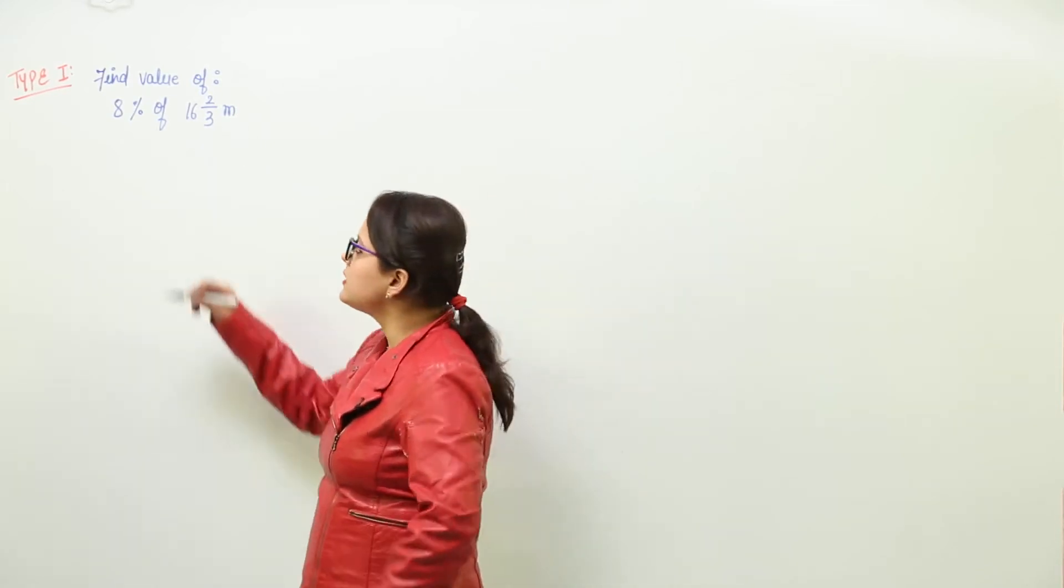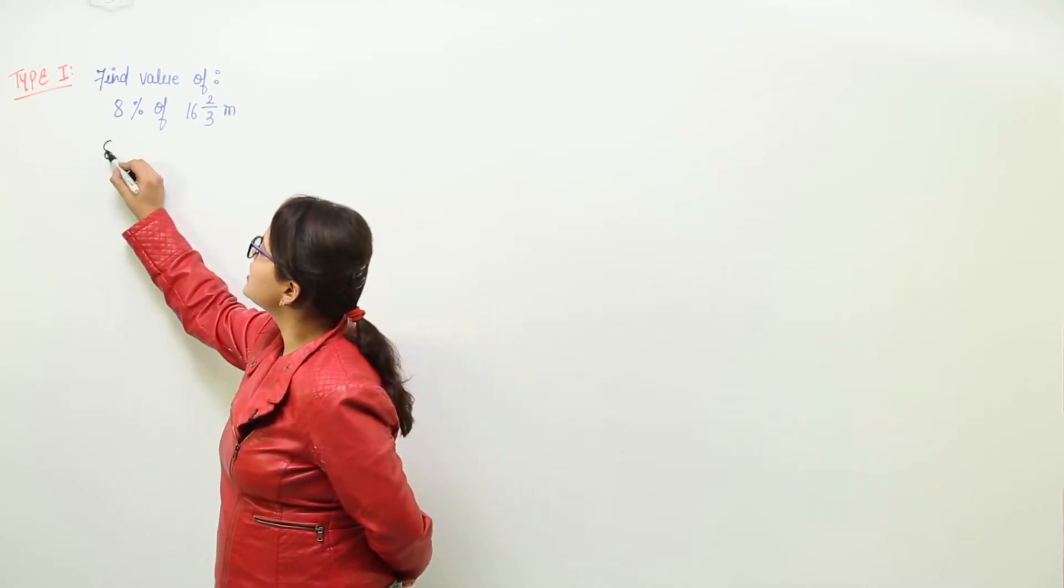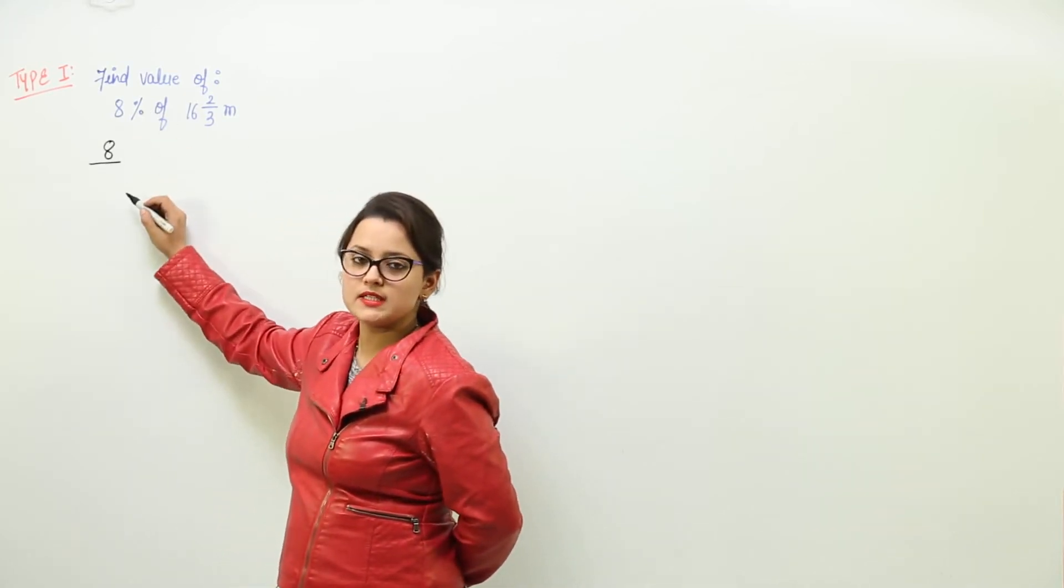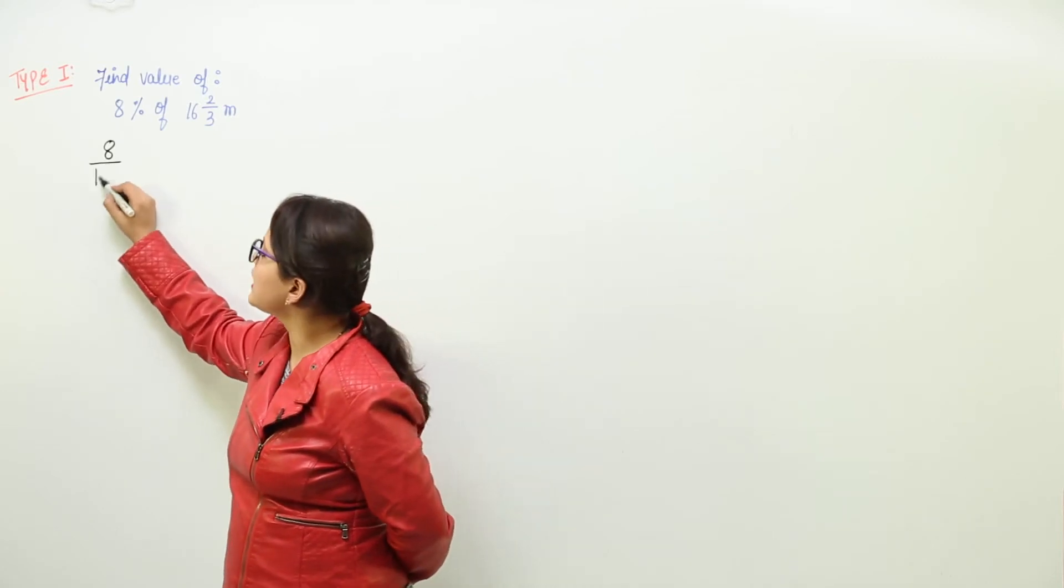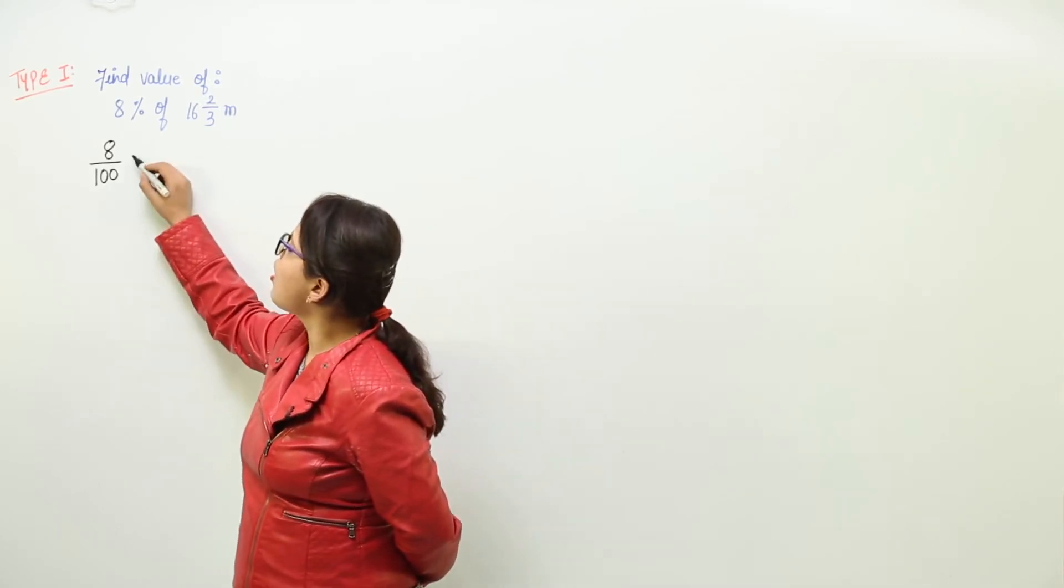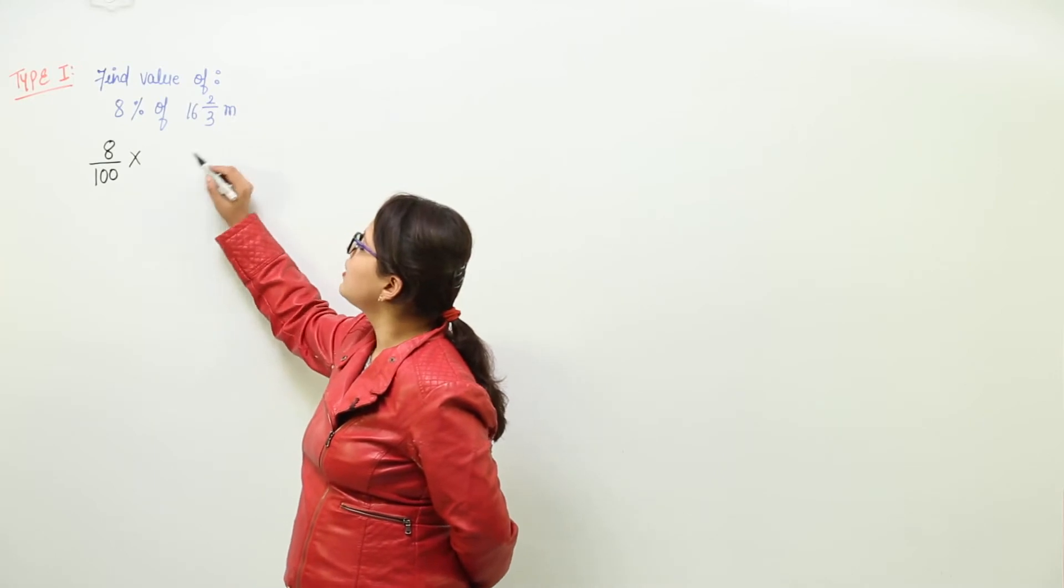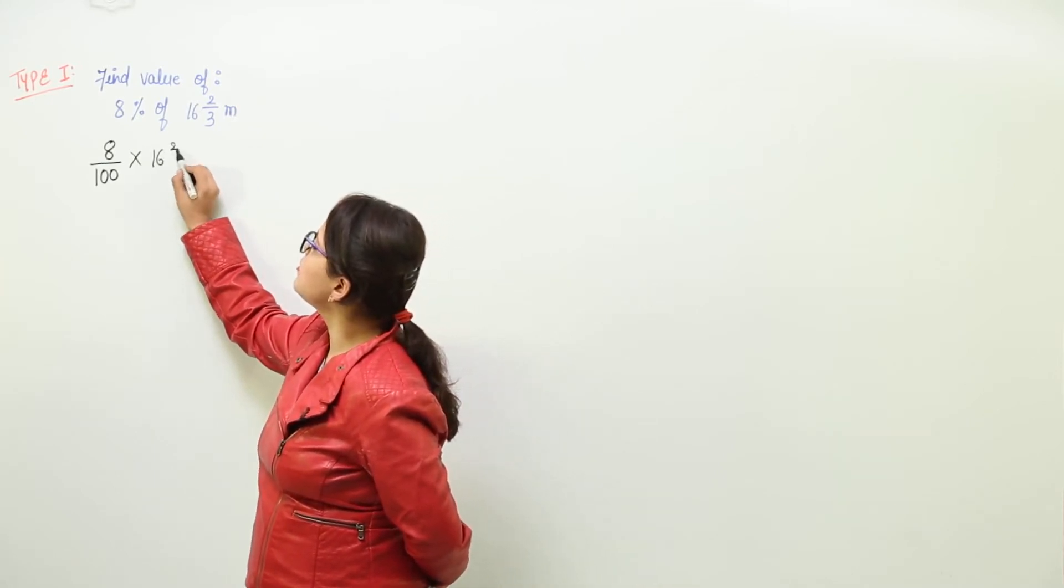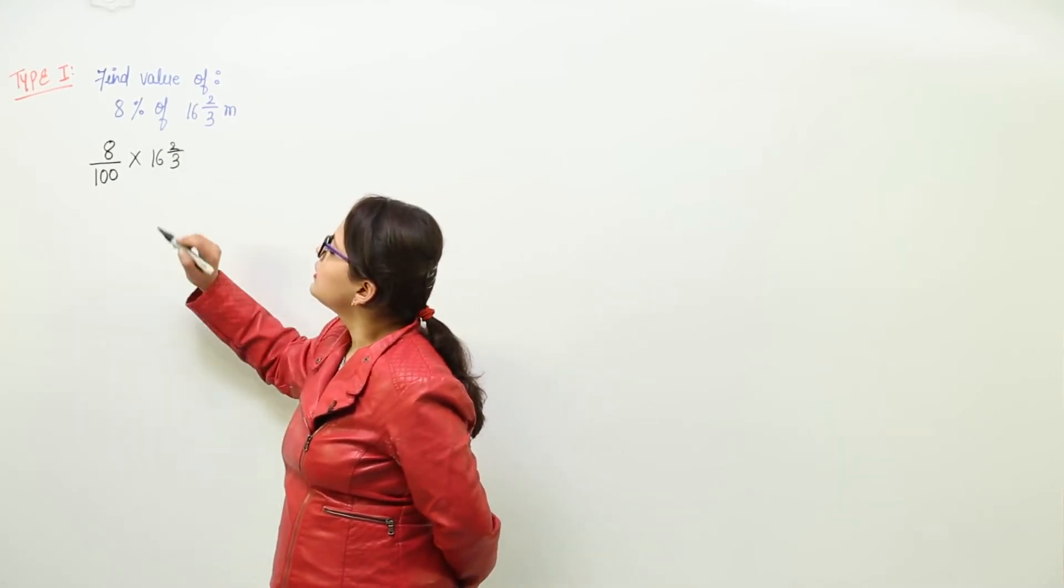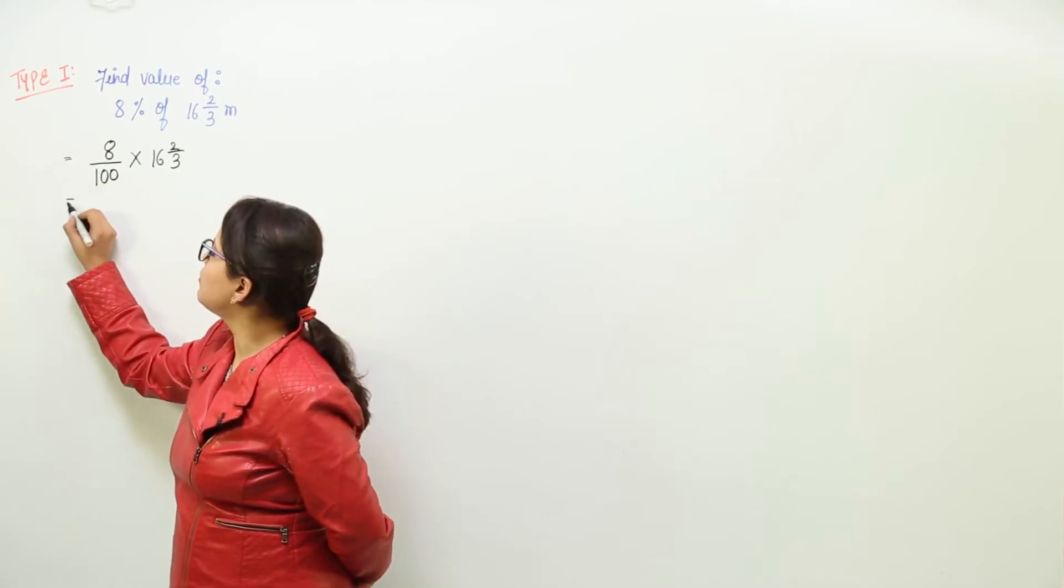Now to calculate this, we have to represent 8 and remove this percentage sign. So we can write 8% as 8 upon 100. Of means the multiplication sign, and this is 16 whole 2 by 3.